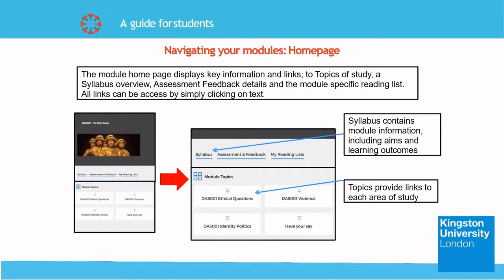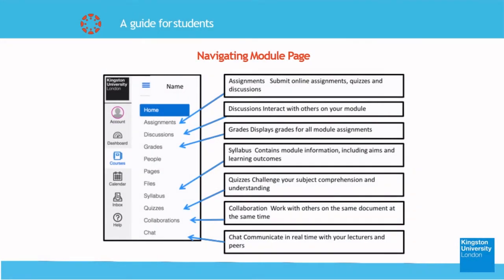There should be a list of buttons for various functions on the left of the module page. The home button is where the home page of the module is located with all module information and announcements. Assignments is where you submit online assignments, quizzes, and discussions. Discussions are where you interact with others on the module. Grades display grades for all module assignments. The syllabus contains module information including aims and learning outcomes. Quizzes are where you take your subject comprehension tests. Collaboration is where you work with others on the same document at the same time, much like Google Docs, Slides and Sheets. At chat, you communicate in real time with your lecturers and peers.